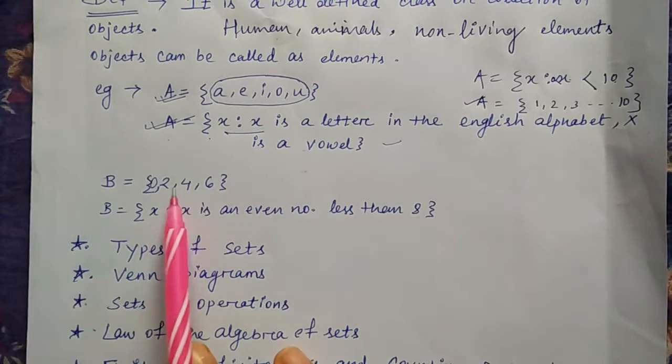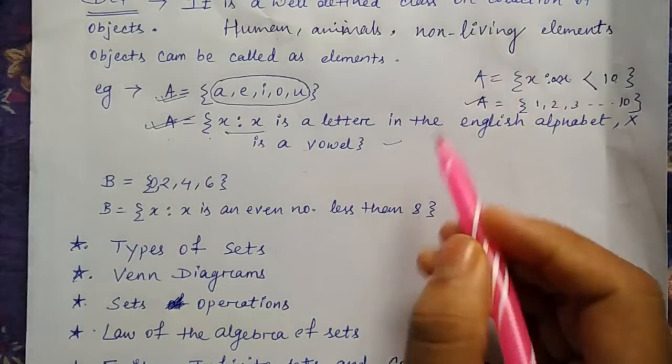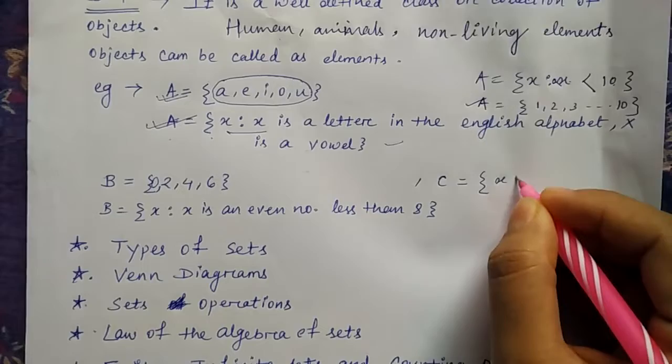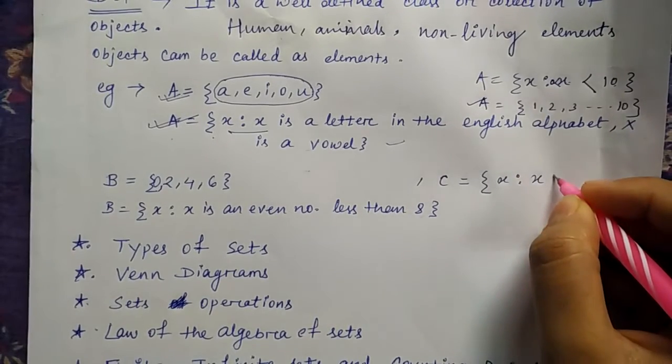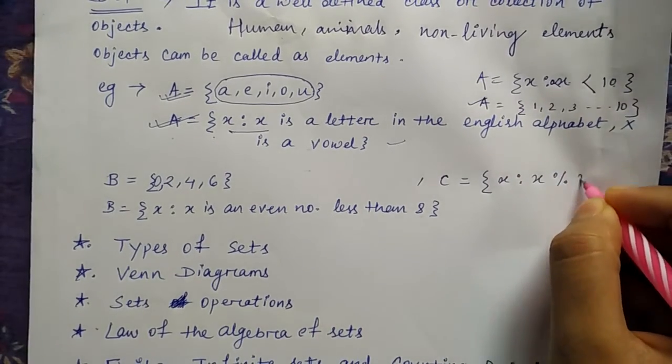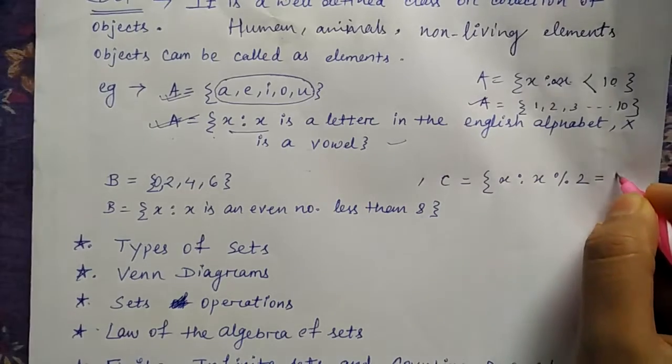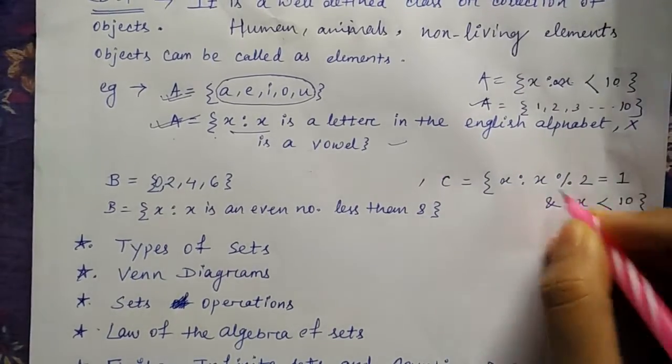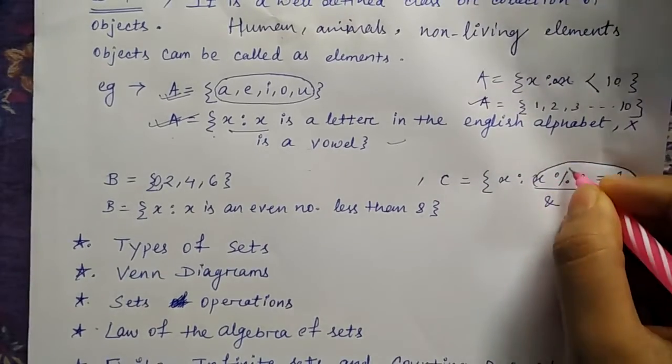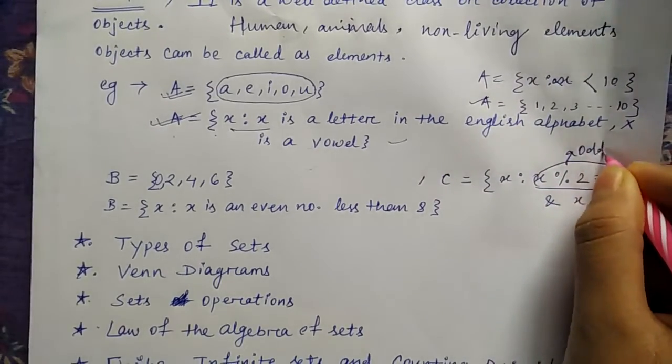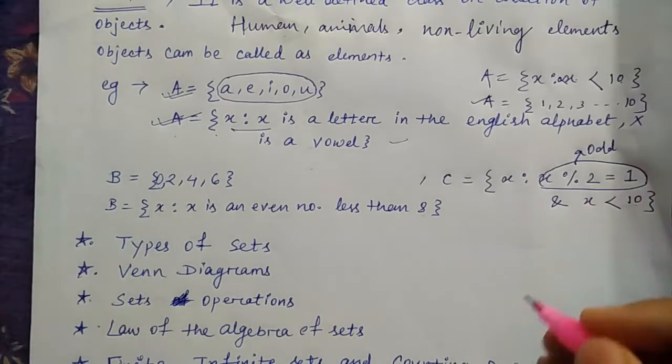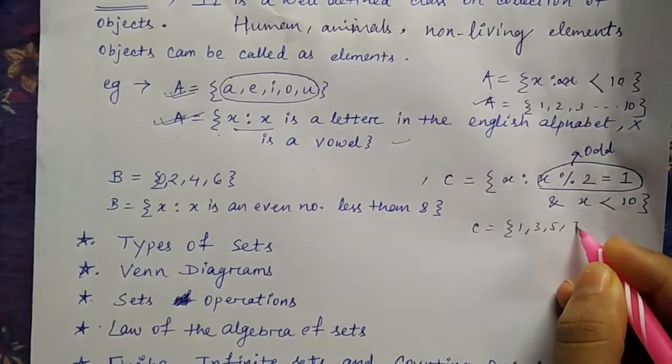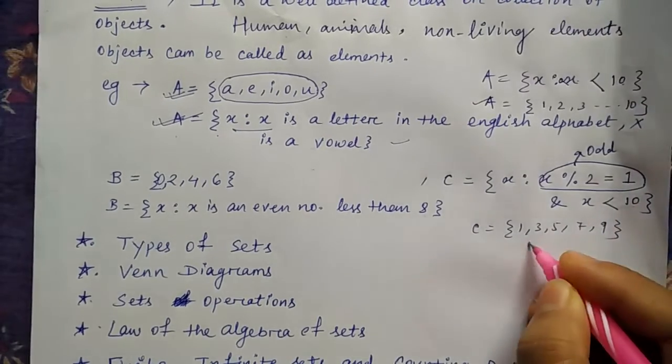Whatever the number less than 8 are also even, that is 0, 2, 4, 6, that you can write. Or I will give you one more example: C = {x: x mod 2 = 1 and x < 10}. Modulus 2 equal to 1 means what? This denotes an odd number. So what are the odd numbers present within 10? It is 1, 3, 5, 7, and 9.